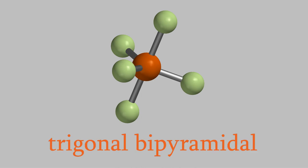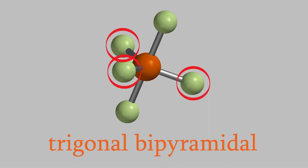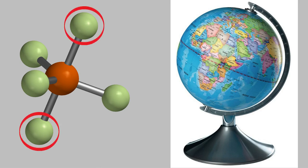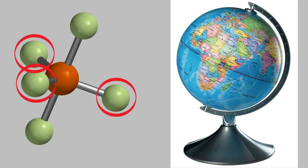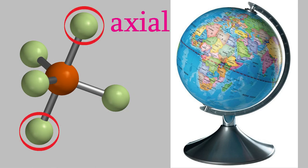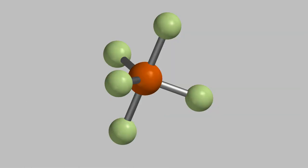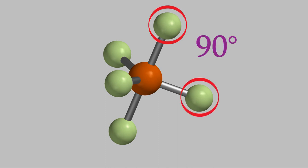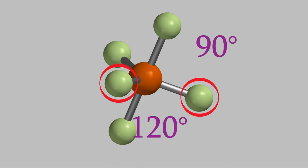If you look closely at the shape, you'll notice that two of the bonds are directly opposite each other, and the other three form a triangle around the middle. This kind of resembles a globe of the earth. The two bonds opposite each other are like the north and south poles of the earth's axis, and the three around the middle point along the earth's equator. For that reason, these two bonds are called the axial bonds, and these are called equatorial bonds. There are actually two different angles between the bonds: the angle between the axial bonds and the equatorial ones is 90 degrees, but the angle between each of the equatorial bonds is 120 degrees.